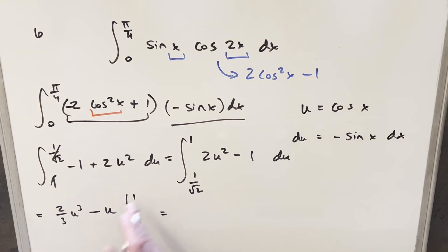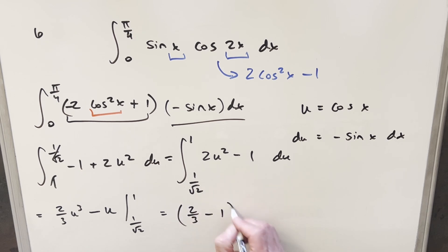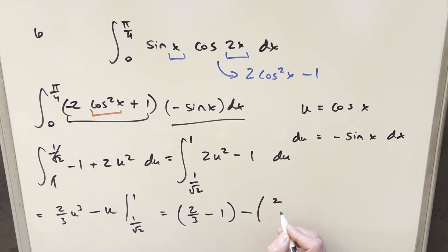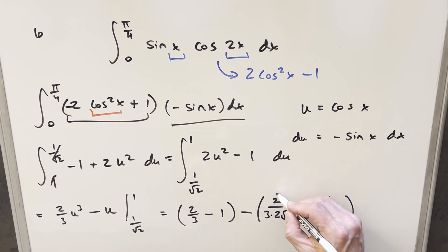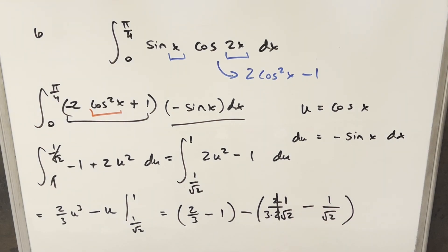Evaluating at u = 1: this gives 2/3 - 1. Evaluating at u = 1/√2: we get 2/3 times (1/√2)³, which is 2/(3 · 2√2), and then minus 1/√2. I can cancel the 2s in that term, and then get a common denominator by multiplying by 3/3. I'm a bit out of space, so let me clean up the board and finish.